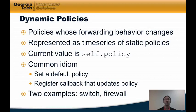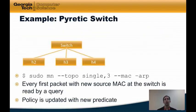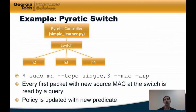The first example is a learning switch. We'll then take the learning switch and use sequential composition to build a firewall on top of it. Let's go back to the topology with three hosts connected to a single switch. We'll attach a Pyretic controller to that topology that implements a simple learning switch. Every first packet with a new source MAC address at the switch is read by a query, and we'll register a callback for that query that updates the policy with a new predicate every time a packet arrives.